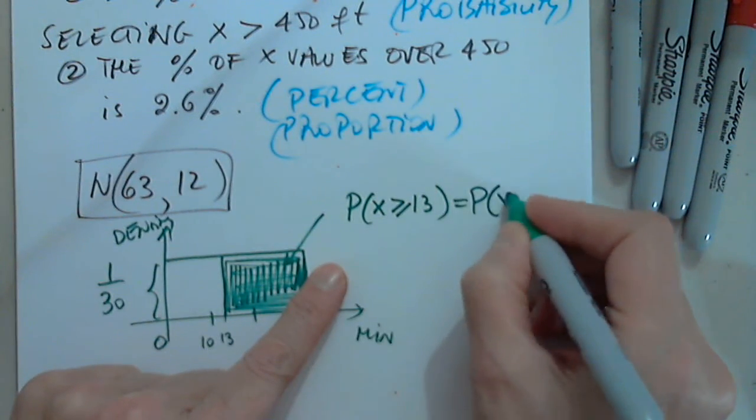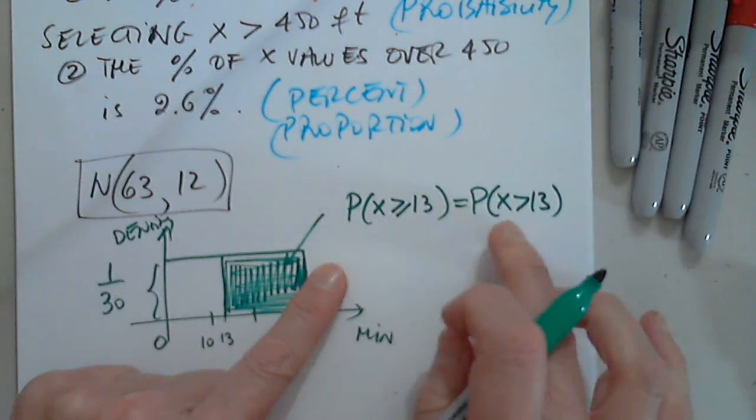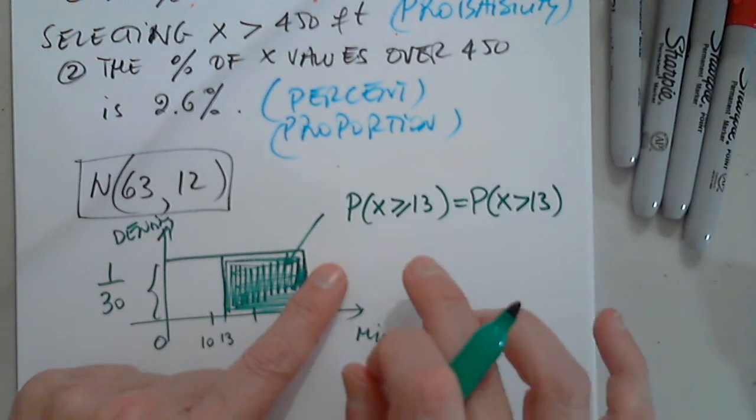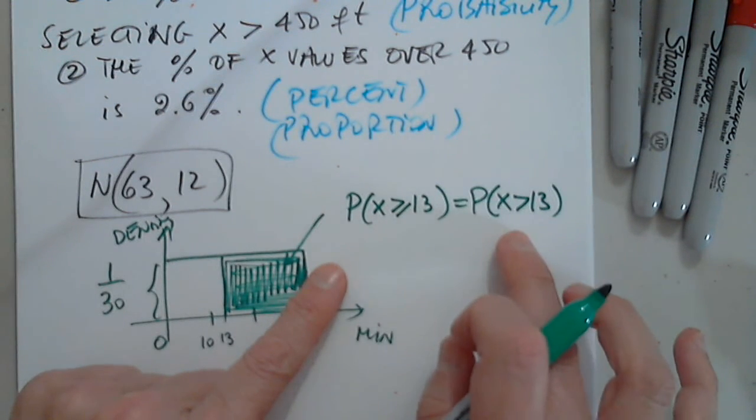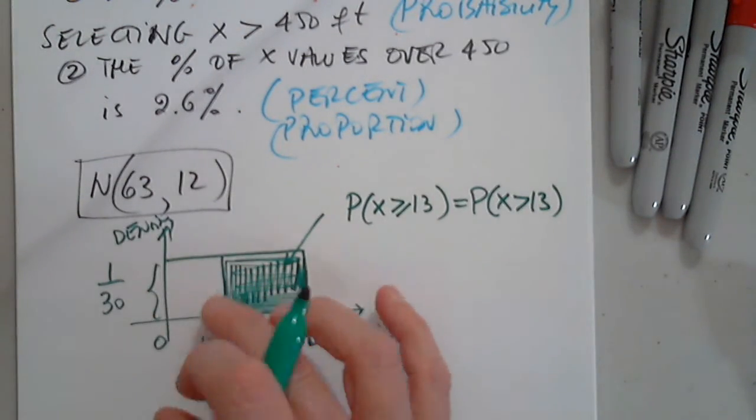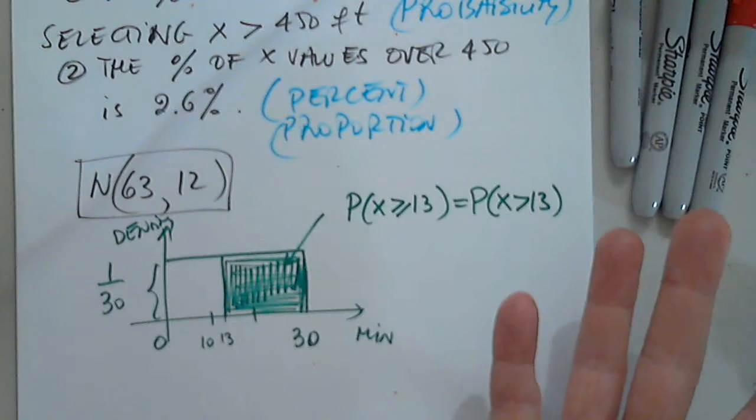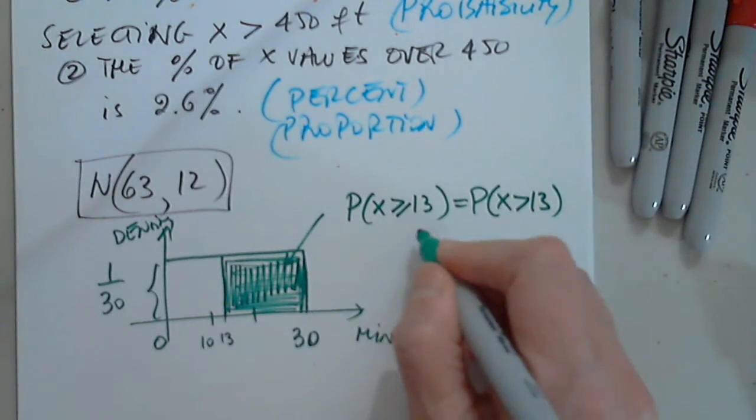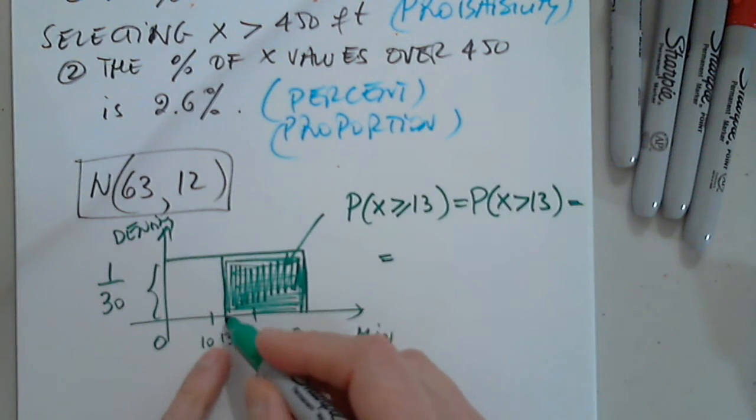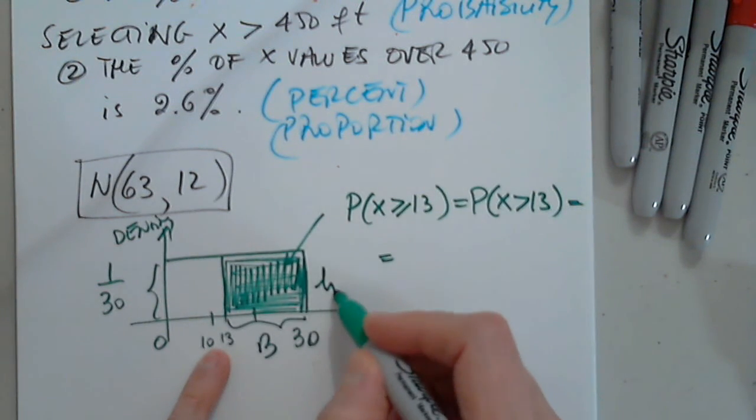For continuous random variables, this is the same thing. This does not happen for discrete random variables. It does not happen for binomial. They are not the same. But every time we talk about continuous, either uniform, let's say in our case, or normal, these two are identical. So I have to determine this area.